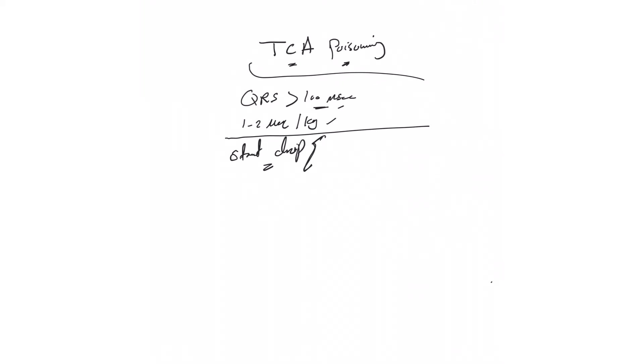You start bicarb drip, and again you could mix it with D5W the way we mentioned, free water, or with half normal saline. The more bicarb you want, you go with this.